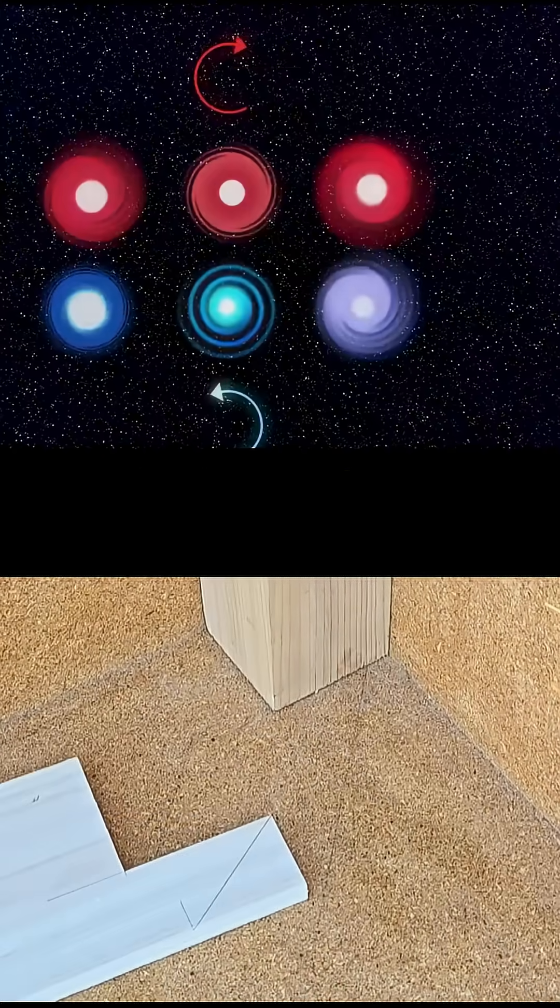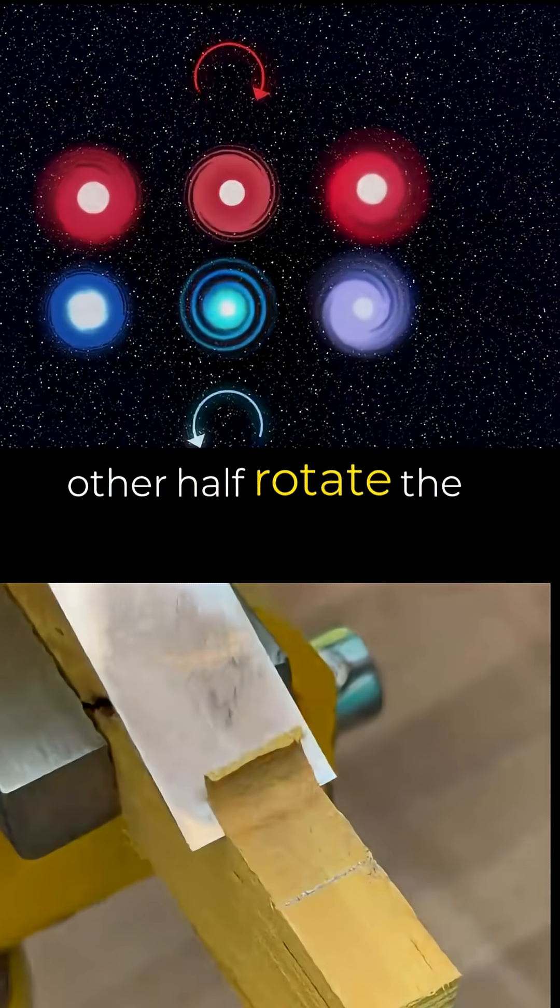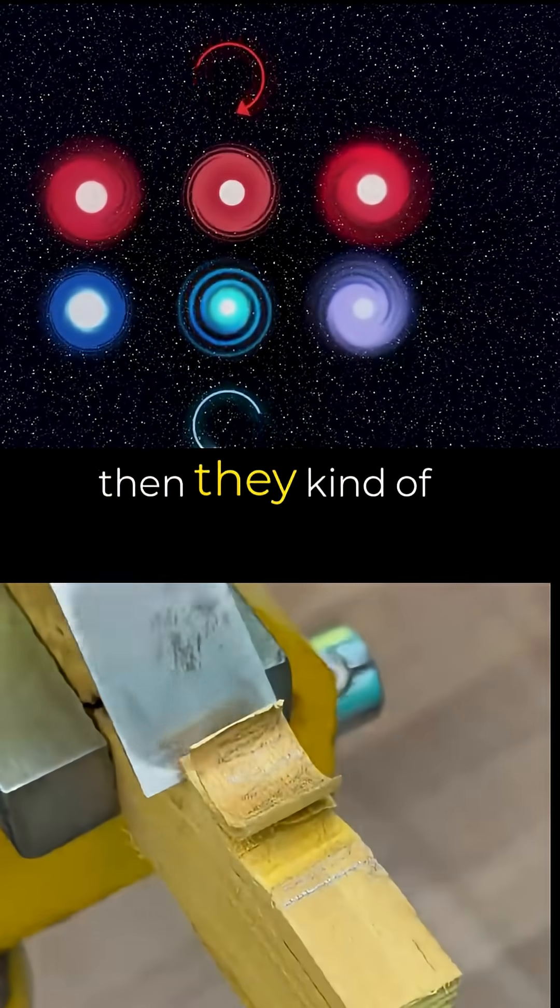So if you look at spiral galaxies, if half of them sort of rotate like that and the other half rotate the opposite way, then they kind of cancel.